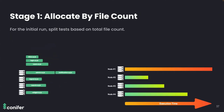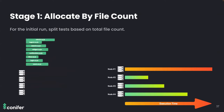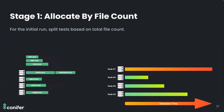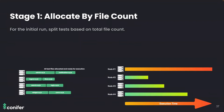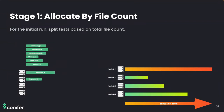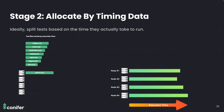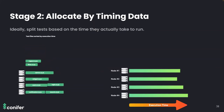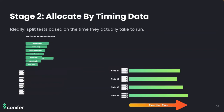The stage one algorithm splits files evenly but doesn't necessarily represent the most efficient split, because certain test files may take longer to run than others. For instance, even though each node has the same number of test files, node one may take much longer than node two — a problem because the test run is only as fast as the slowest node. This brings us to stage two, where test files are allocated based on timing data. After the initial run, Conifer persists metadata about each test file, including how long each test takes to run.